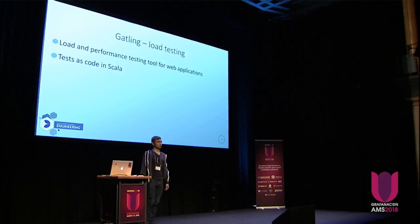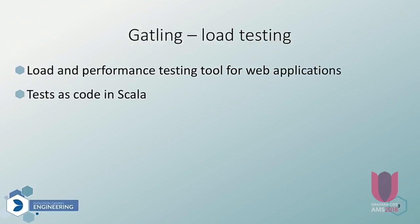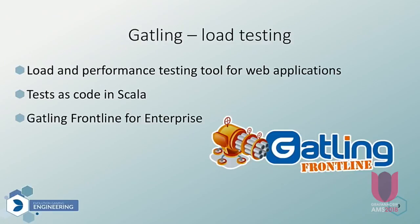The next very popular performance tool is Gatling. For Gatling, tests are code written in Scala. Unfortunately, in the free version there is no support for export to any time series database. But there is an enterprise version called Gatling Frontline, which allows us to export data to InfluxDB.